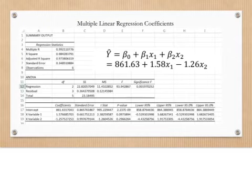Our regression equation is Y equals 861.63, which is our intercept, plus 1.58x1, because that's our X variable 1, minus 1.26x2, as we see down here.